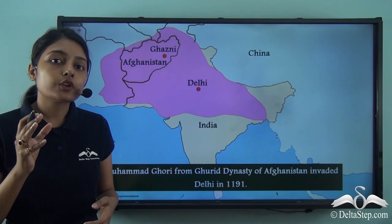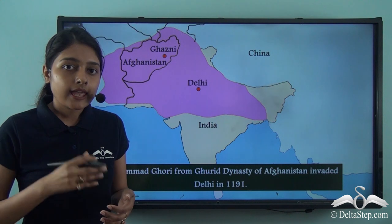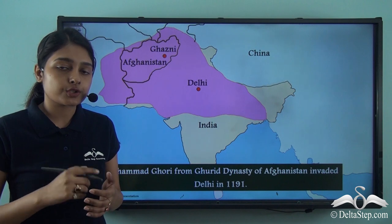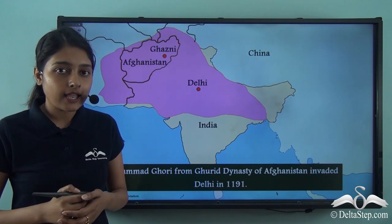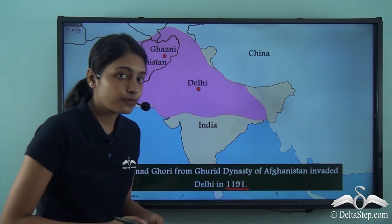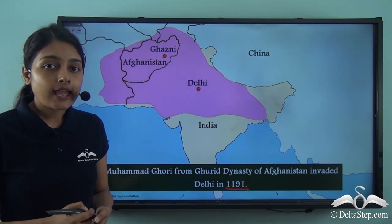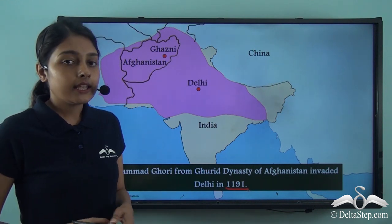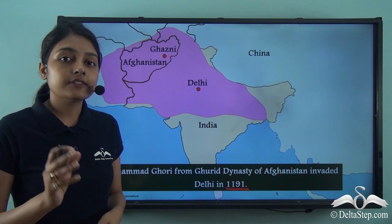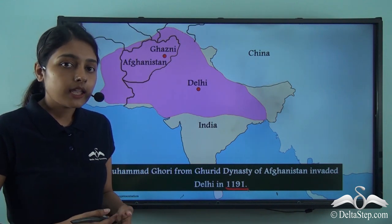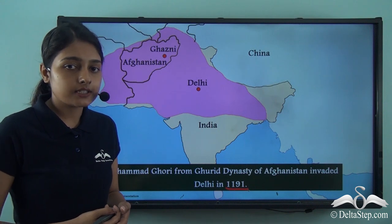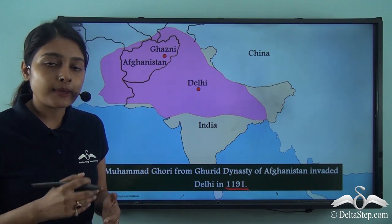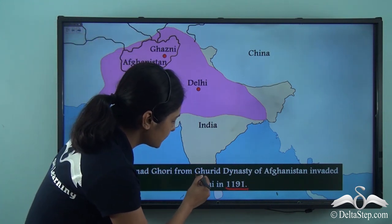Before discussing the rule of Sultan Qutubuddin Aibak and the details of the slave dynasty, let me give you a little backstory. You must remember that in 1191, Muhammad Ghuri had invaded Delhi for the first time — from Afghanistan he came and invaded this city. In the following year, i.e. in 1192, he took control of Delhi, and with this he expanded his already existing Ghurid dynasty.